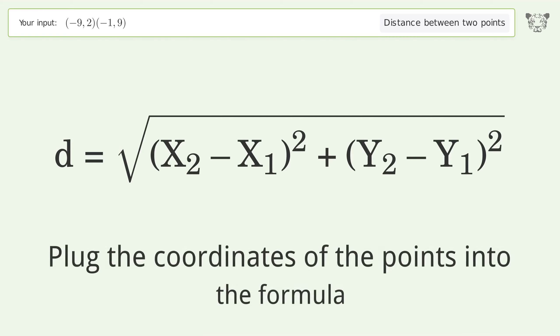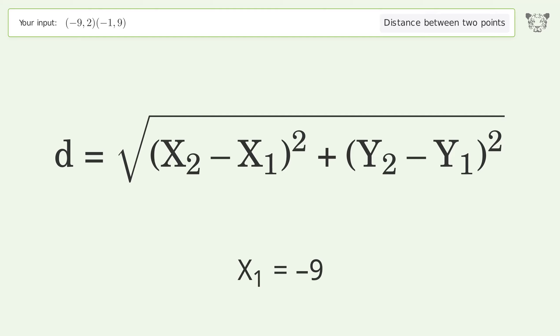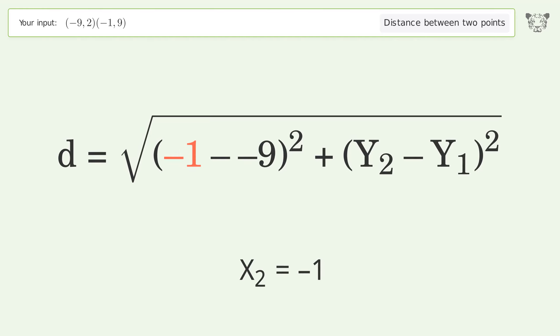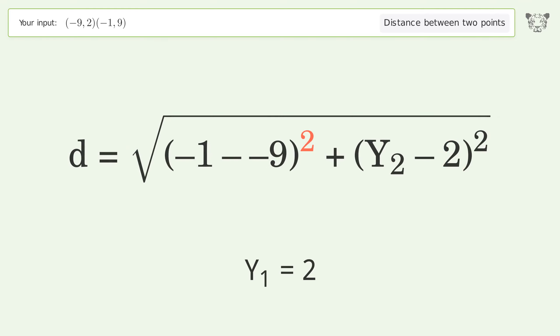Plug the coordinates of the points into the formula: x1 equals negative 9, x2 equals negative 1, y1 equals 2, y2 equals 9.